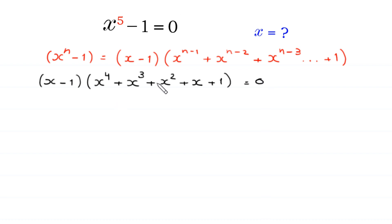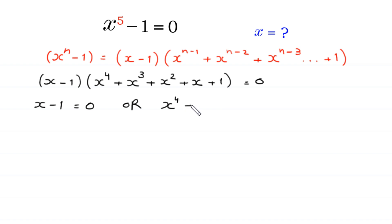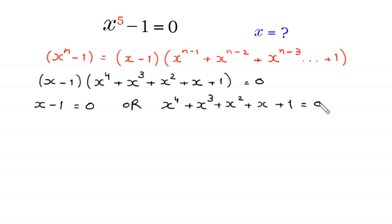From here, either the expression (x minus 1) is equal to 0, or the expression (x to the power 4 plus x cubed plus x squared plus x plus 1) is equal to 0. From x minus 1 equals 0, we get x equals 1. This is the first value of x, the first solution.